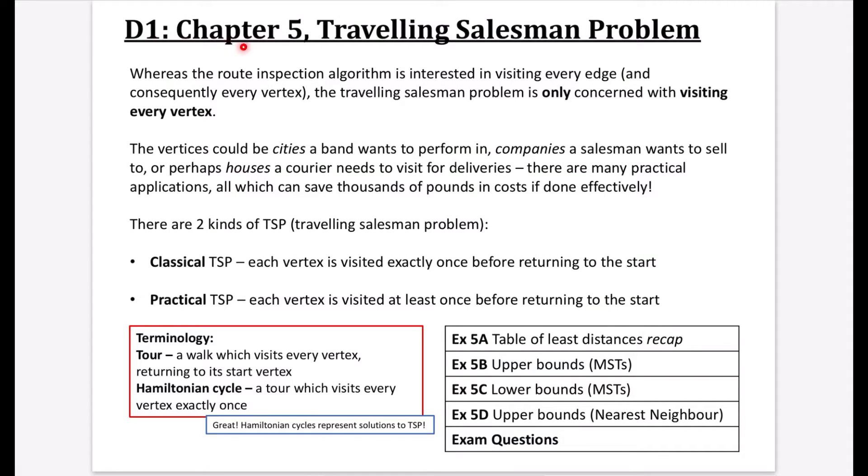Okay, so we're now on to chapter five, which is the traveling salesman problem. And it kind of feels a bit like a variation on what we've been doing in chapter four, which was route inspection. But whereas the route inspection algorithm is interested in visiting every edge and consequently every vertex, the traveling salesman problem is only concerned with visiting every vertex.